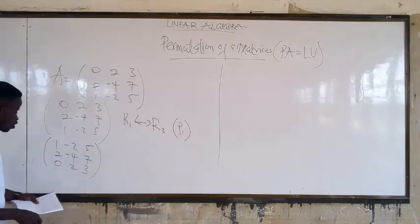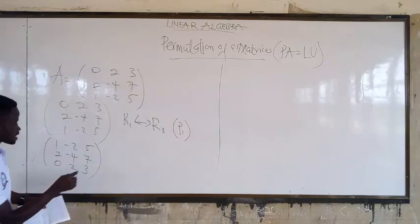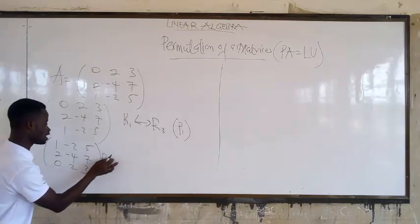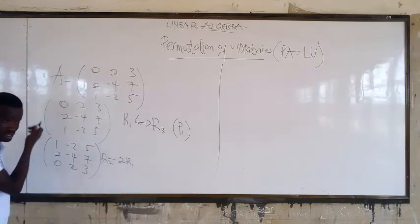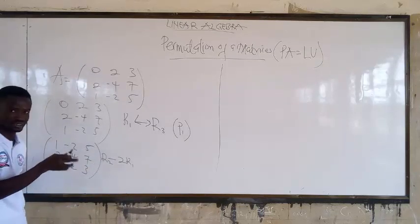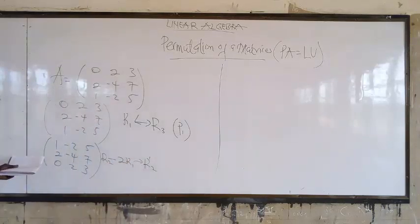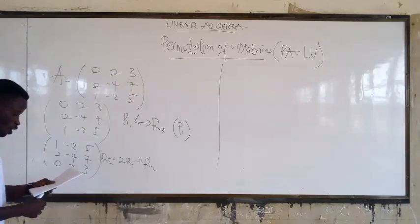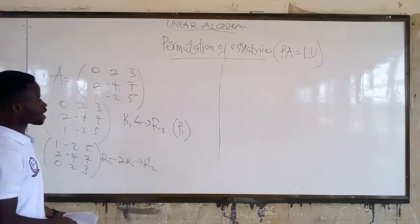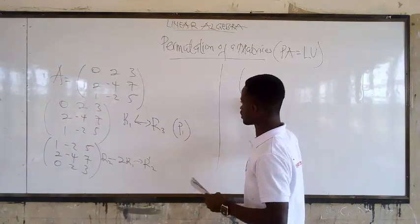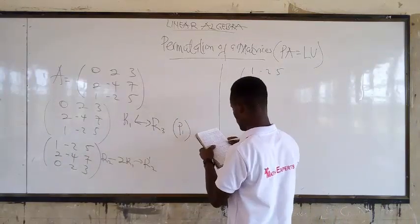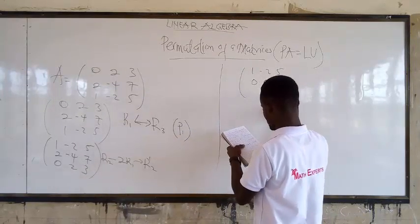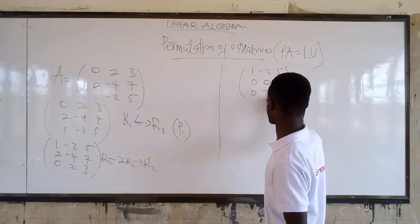Now we get: row 1 becomes 1, -2, 5; row 2 becomes 2, -4, 7; and the original first row becomes third row: 0, 2, 3. Now we want to make the entry below the pivot 0. We multiply 2 by row 1 and subtract from row 2 — 2 minus 2 equals 0. So we do R2 minus 2·R1.